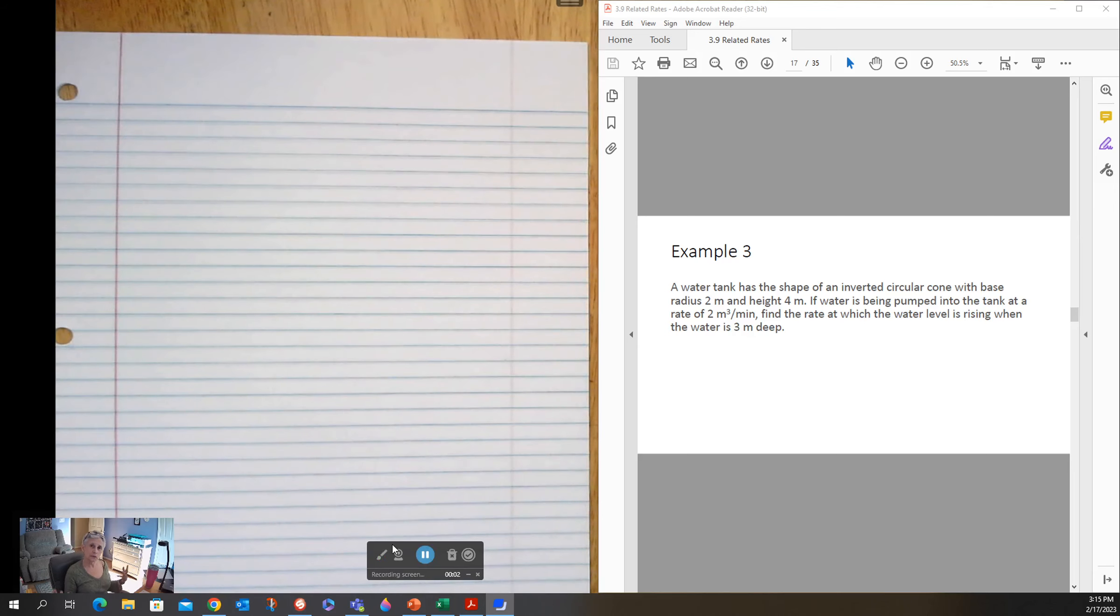Example three is another one that uses geometry, a little more complicated than a sphere because a sphere only has one variable. This one has a cone which has a radius and a height, which adds another layer of complexity to the problem.